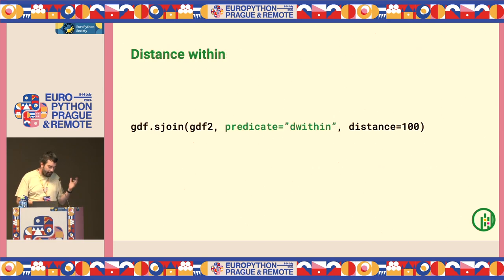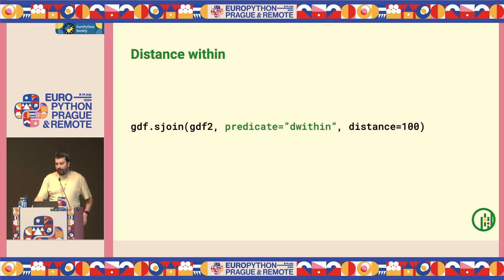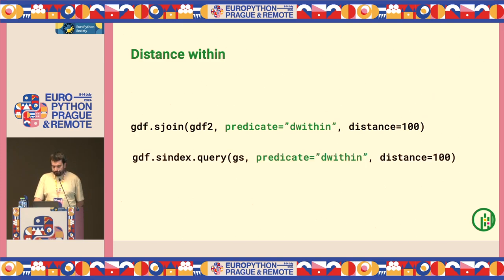Until GeoPandas 1.0, you could join two sets of geometries spatially based on intersection, within, overlap, or touching — but there had to be some relationship where coordinates were at the same place. Now we've included a new spatial predicate called dwithin (distance within), allowing you to join points that are, for example, within 100 meters of other points. No need to manually buffer by 100 and then do an intersection join — you can go directly and it's much faster. This is also exposed within the underlying spatial index.